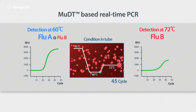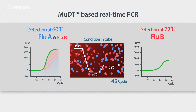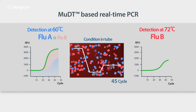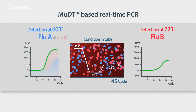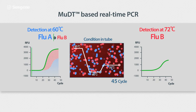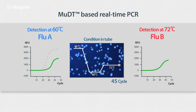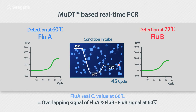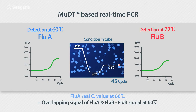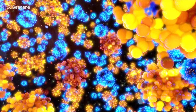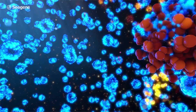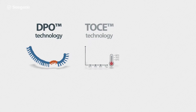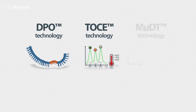When we examine the signal intensities at 60 degrees Celsius, signals from both Flu A and Flu B are overlapping, whereas only the signal for Flu B can be read at 72 degrees Celsius. MUDT then works to exactly subtract the fluorescence signal for Flu A from the overlapping signal collection at 60 degrees Celsius.